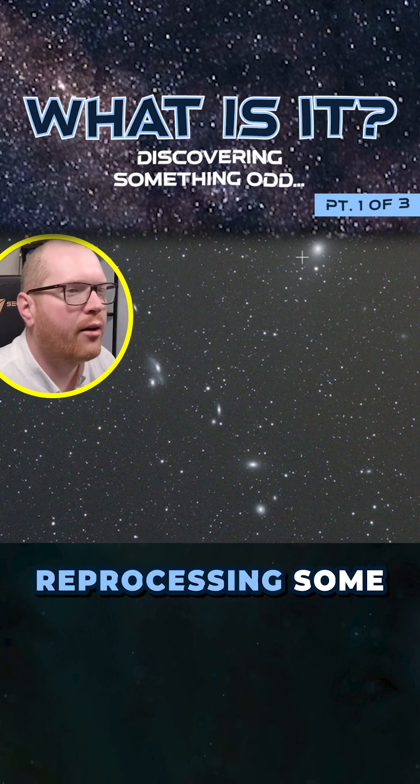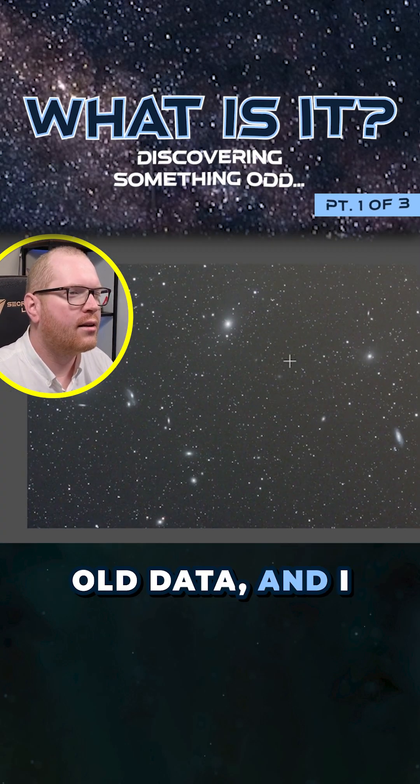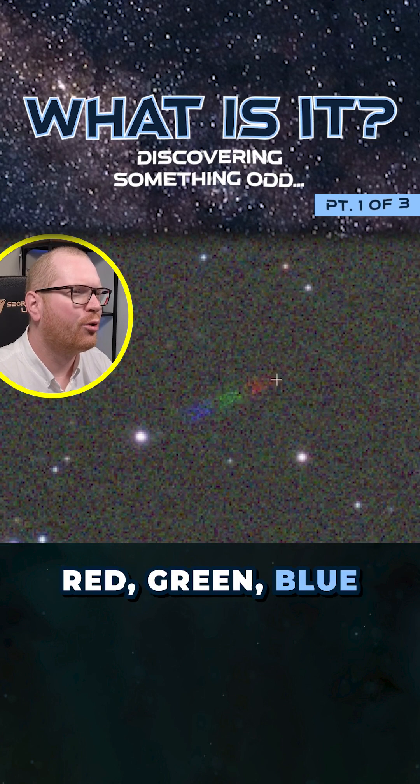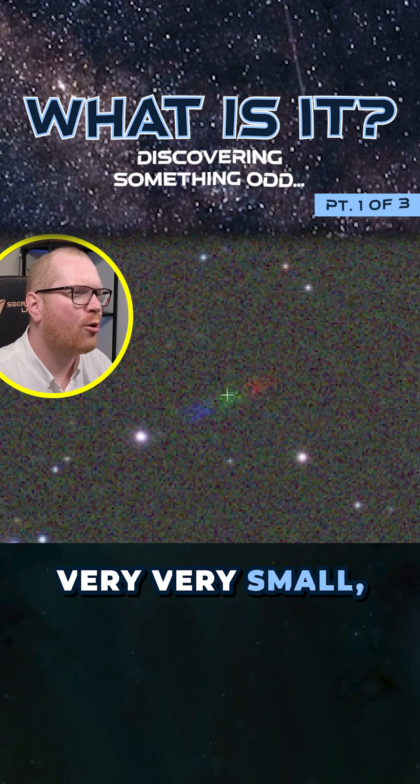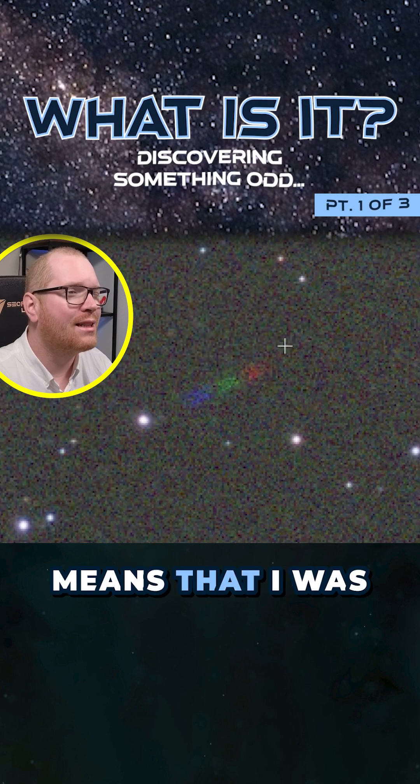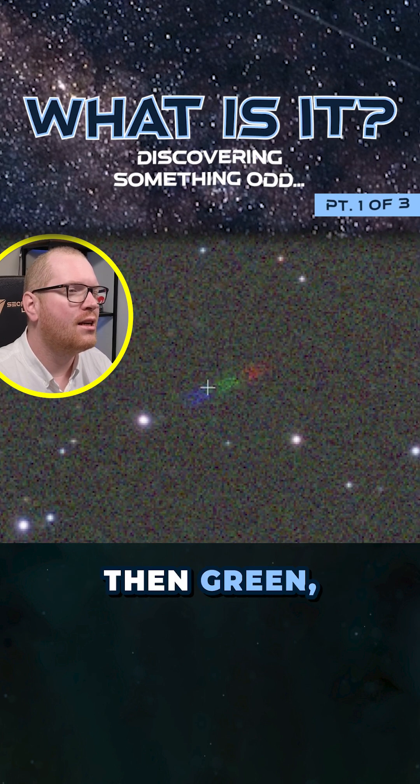Take a look at this. I was sitting and reprocessing some old data and I came across this: some kind of red, green, blue streaks here, very small, very tiny, going through the center of the image. This is shot with a mono camera, and that likely means that I was shooting first red, then green, and then blue.